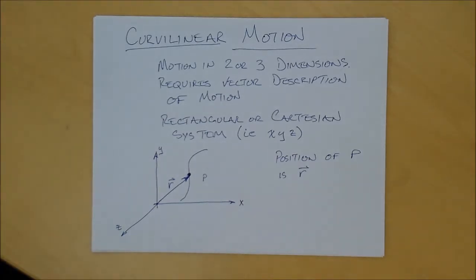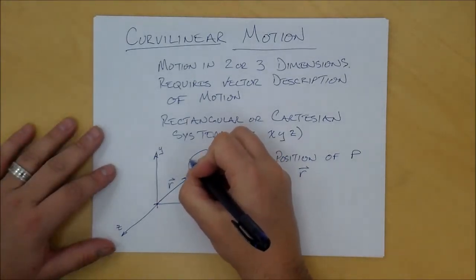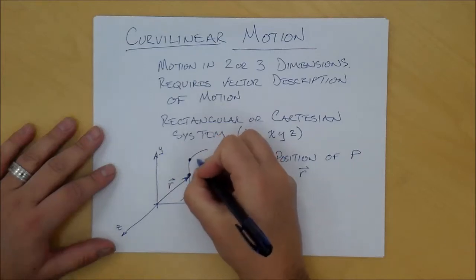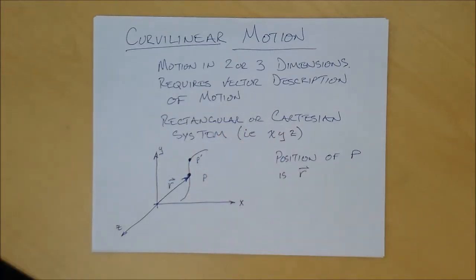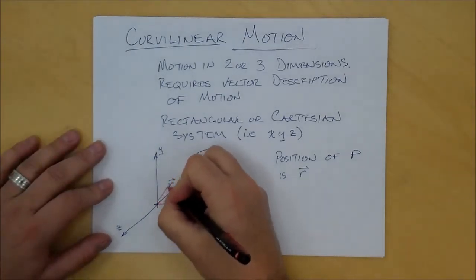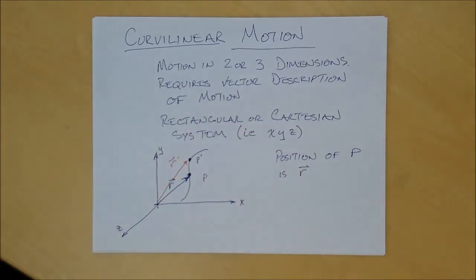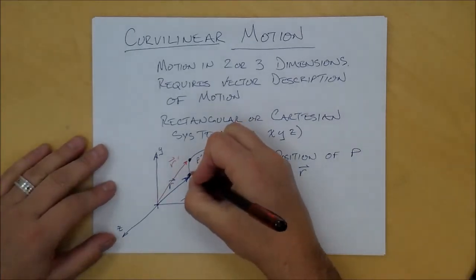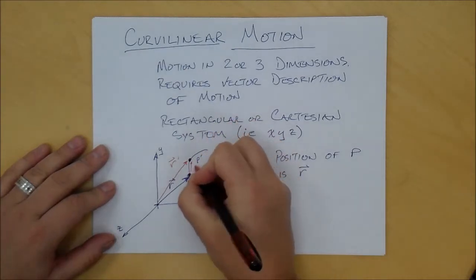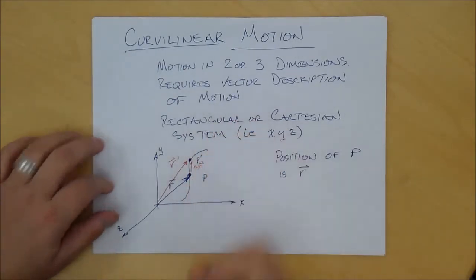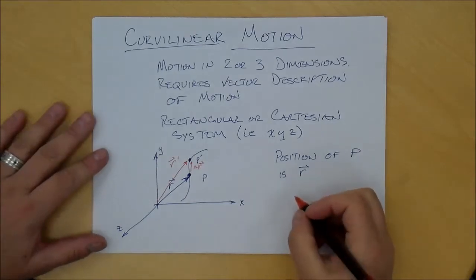Now if we look at the position of that particle some short time later, suppose it has moved along the path to a new position P prime, with position vector R prime. The change in position between P and P prime is the vector delta R. That's the change in position over some interval.